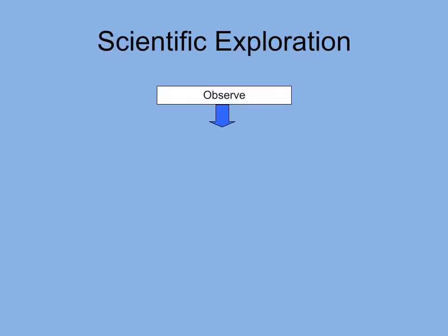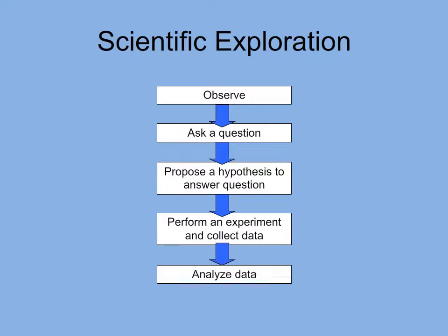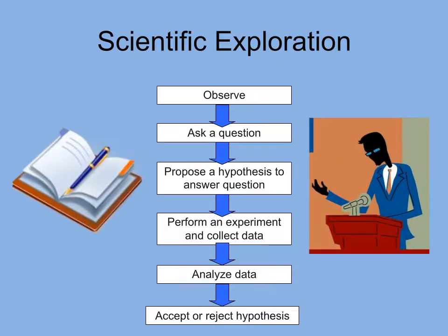Hypothesis testing is accomplished through the scientific method. The basic steps of the scientific method are: observation of a phenomenon, asking a question about the phenomenon, forming a hypothesis based on the question, experimentation and collection of data, analyzing the data, and acceptance or rejection of the hypothesis. The hypothesis can be revised if necessary, and you do need to report your findings to the scientific community.